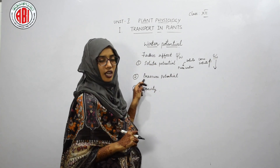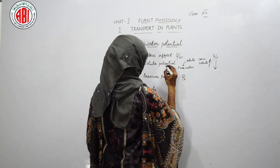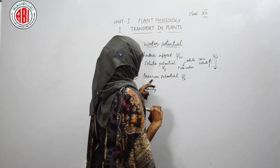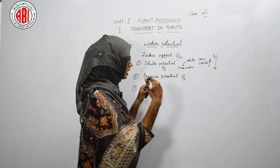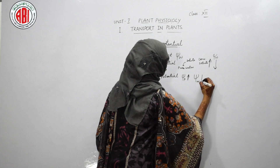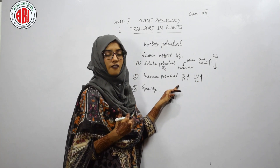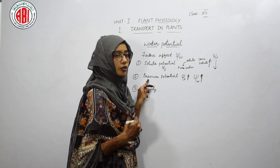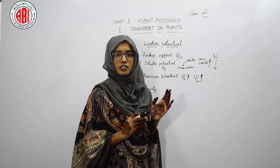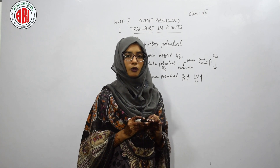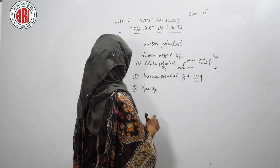The next factor is pressure potential, represented by ψp, while solute potential is represented by ψs. When pressure potential increases, water potential also increases — showing a positive effect. The last factor is gravity, which is negligible and can be avoided since it does not have any substantial effect on water potential.